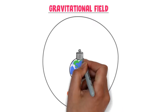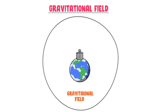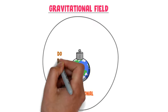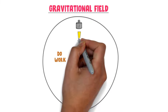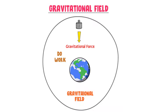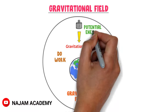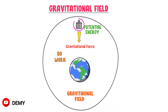For example, consider an object present on the earth's surface. If I do some sort of work on this object and lift it up, does this object experience the downward gravity force? The answer is yes — it experiences the downward force of gravity. If I release it, it will accelerate and fall down towards the earth's center.